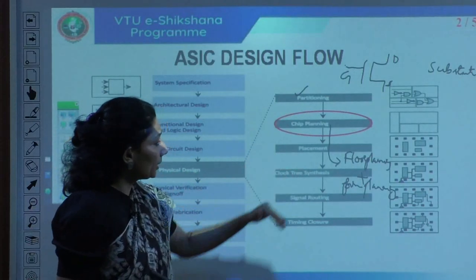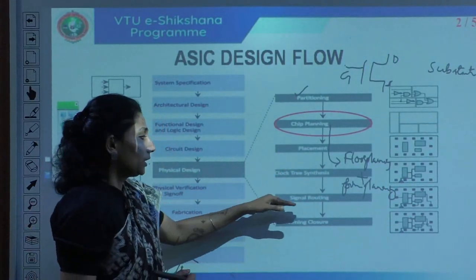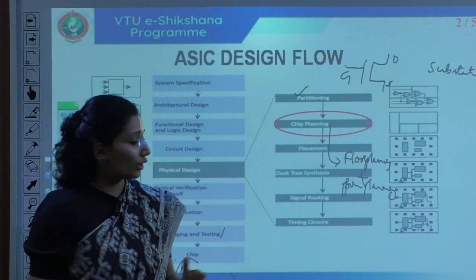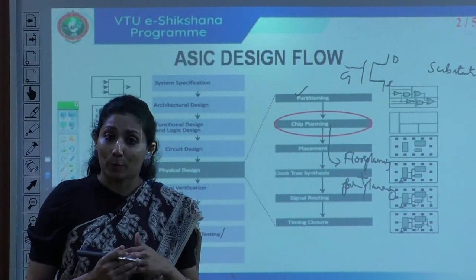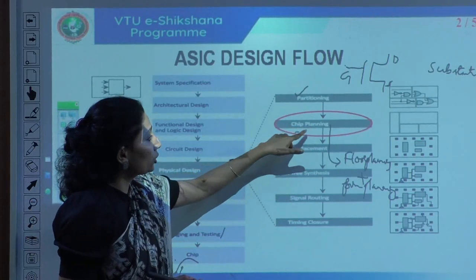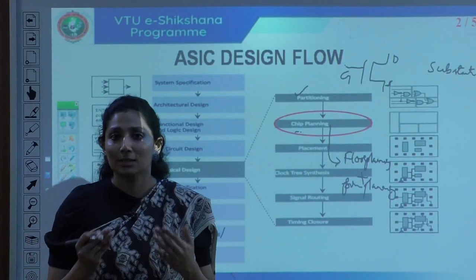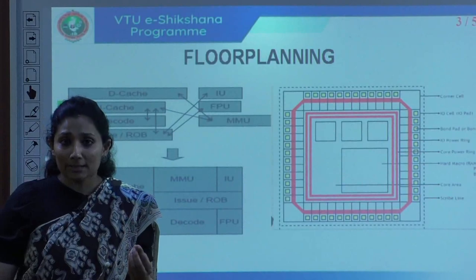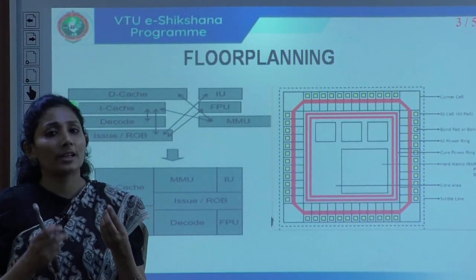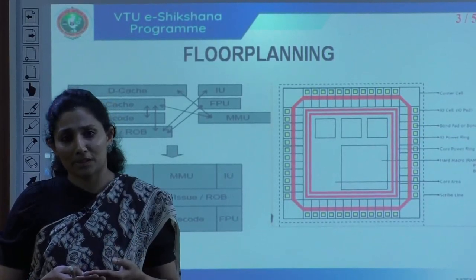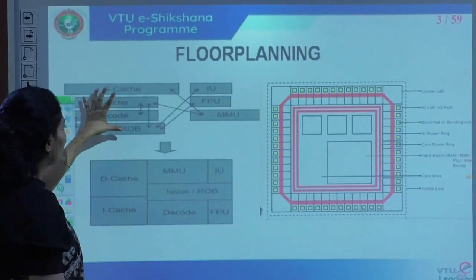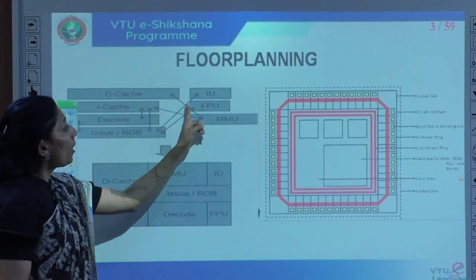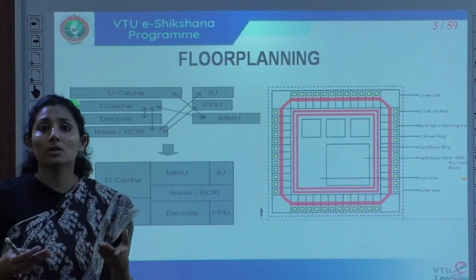After chip planning, we go to placement, then clock routing, power routing, and post-routing simulations. Only after everything is complete does the chip go for tape-out. Now let us focus on chip planning. The very first part is floor planning. It is like a block diagram for your project — you represent all blocks and their interconnections.